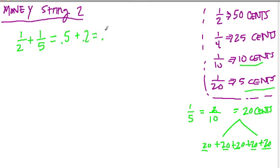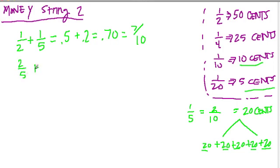So one half plus one fifth is fifty cents plus twenty cents, which equals seventy cents, or 0.7, or seven out of ten.